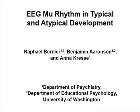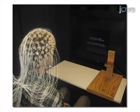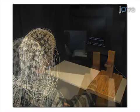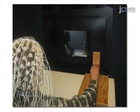The overall goal of the following experiment is to utilize EEG methods to assess the activation of the mirror neuron system in individuals with and without autism spectrum disorder. This is achieved by first collecting high-density EEG during the observation and execution of a motor action, as well as during a baseline rest condition.